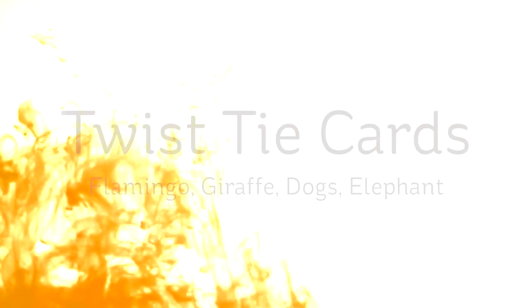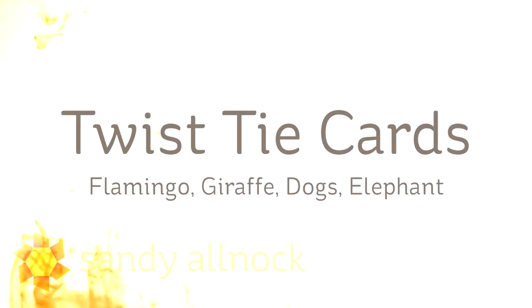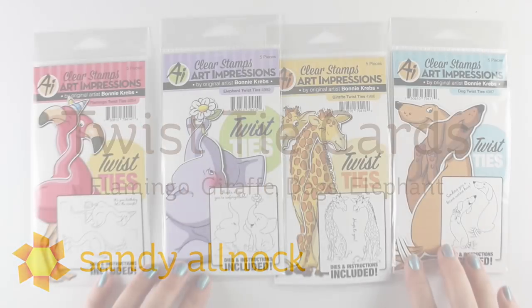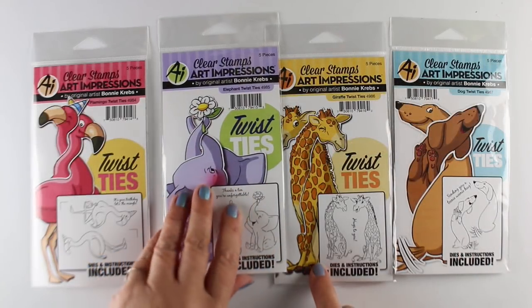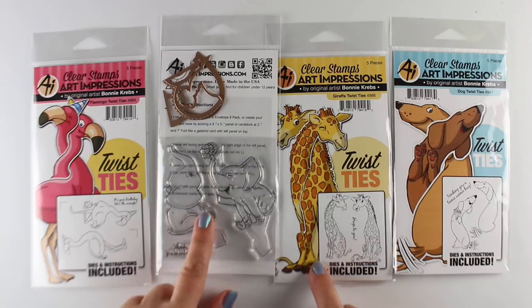Hi there, I'm Sandy Alnock, artist and paper crafter here on YouTube with some twist tie cards today. There's four different ones: flamingos, giraffes, dogs, and elephants. They're all so stinking cute. I was so excited when I saw these. I love that Art Impressions makes so many different kinds of interactive cards.